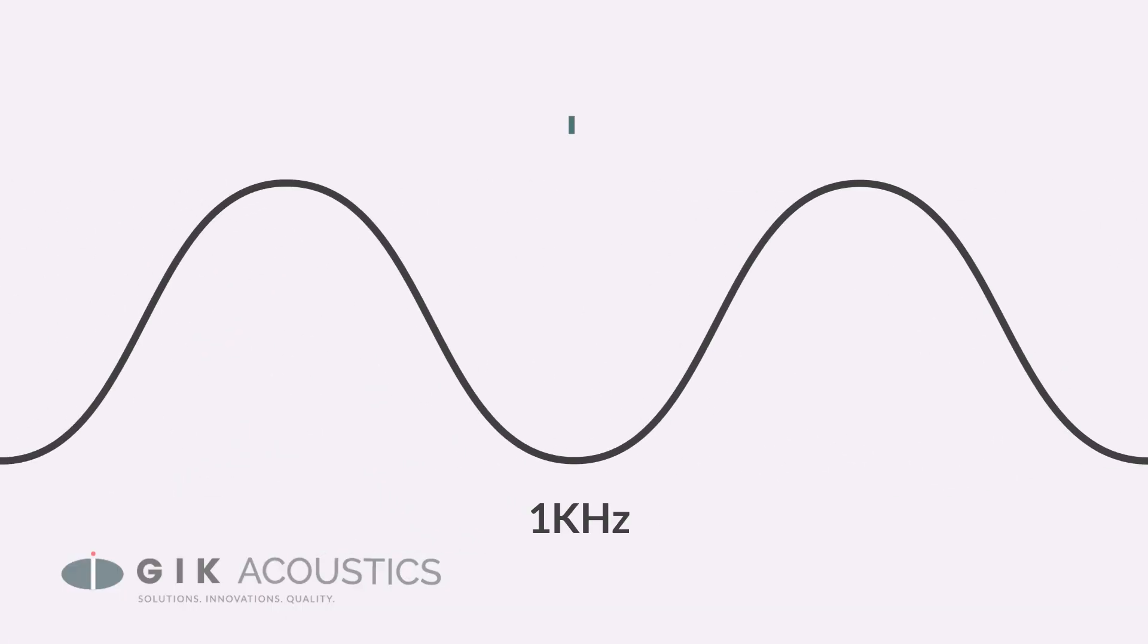That's the distance from one peak of a wave to the other, so a one kilohertz sound wave would have a wavelength of about 13 and a half inches. That means the distance between one peak and the other is about a foot and an inch.